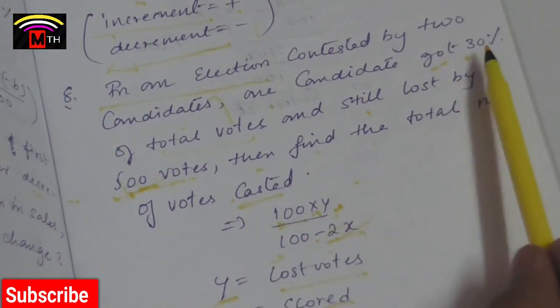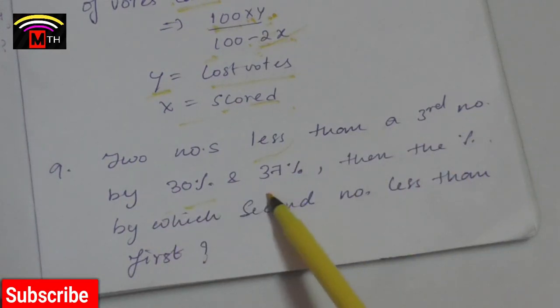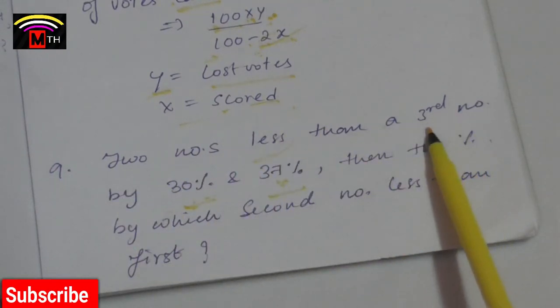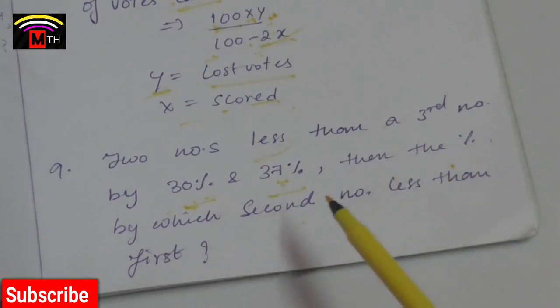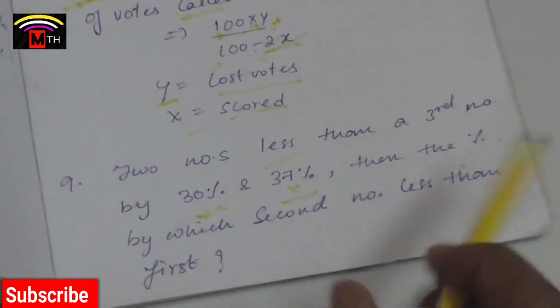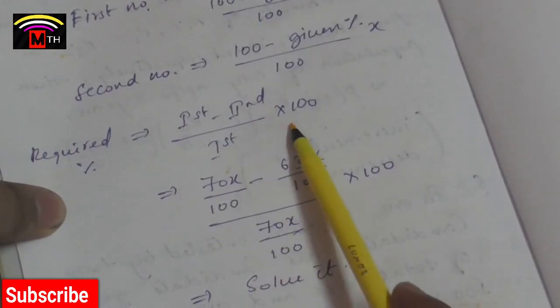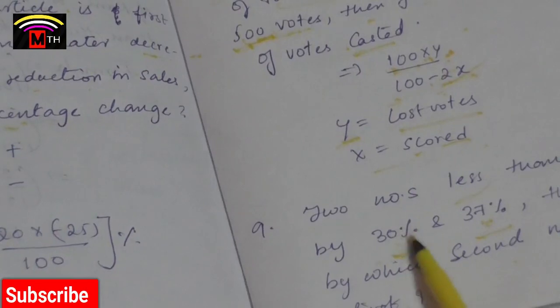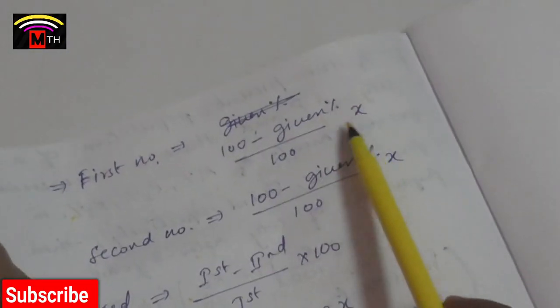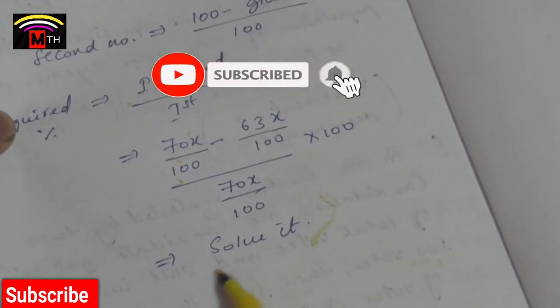Comparison model: a number is 30 percent more than another number. Find the percent by which the second number is less than the first. The formula is: first number minus second number by first number, into 100. Here first number is 100 minus the given percent. For example, 100 minus 37 is 63. Using 100 minus 30 by 100 into X, the answer is 10.